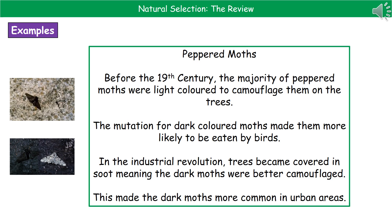We have a couple of examples of natural selection to know about. The first is the peppered moth. Before the 19th century in England, the majority of peppered moths were light coloured, because they would camouflage on the bark of trees — the light coloured one is really quite hard to see in the picture. Any that were dark coloured stood out, so birds could spot them and they were eaten more often, meaning there were far more pale coloured ones in the population.